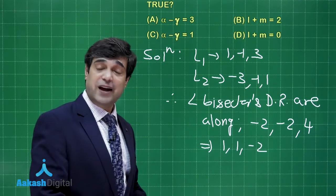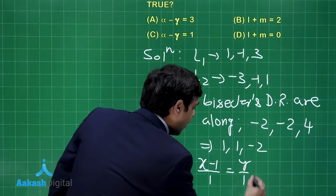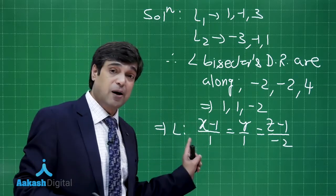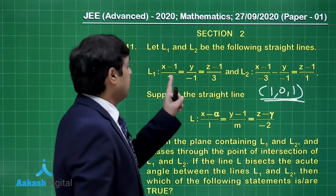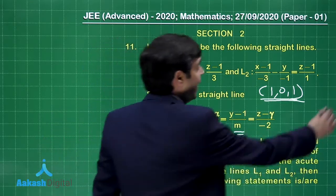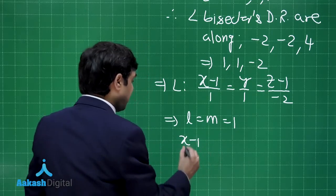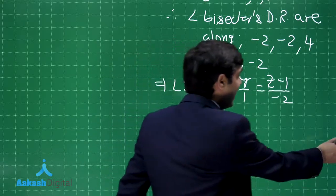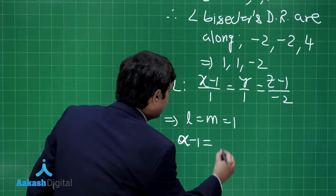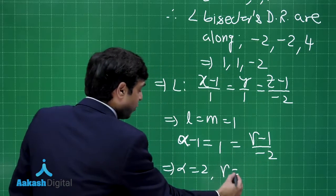We already found the point of intersection (1, 0, 1) through which l also passes. So the equation of l is (x−1)/1 = y/1 = (z−1)/(−2). Comparing with the given form (x−α)/l = (y−1)/m = (z−γ)/(−2), we get l = 1, m = 1. Considering the line passes through (α, 1, γ): α−1 = 1 gives α = 2, and (γ−1)/(−2) = 1 gives γ = −1.